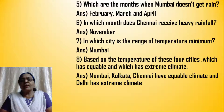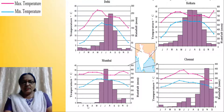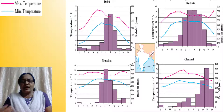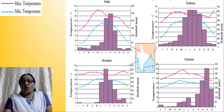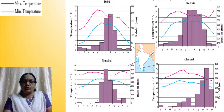Which are the months when Mumbai doesn't get rain? Mumbai doesn't get rain in February, March, April, and December. So you will have to see where the histogram is not there. On the other hand, Delhi gets practically rain in almost all the months. Even Kolkata gets rain in all the months. Chennai also. But in Mumbai, we don't have rainfall for the months of February, March, April, and December.